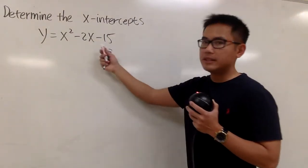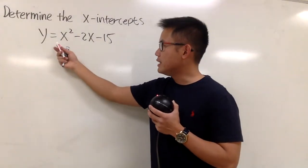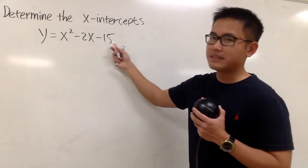Okay, we're going to find the x-intercept of this parabola. We have y is equal to x squared minus 2x minus 15.